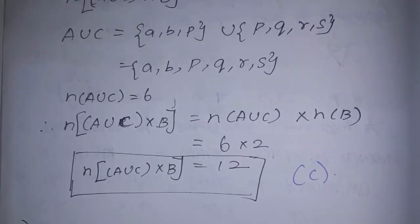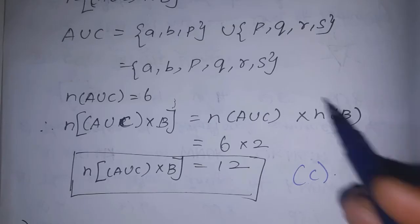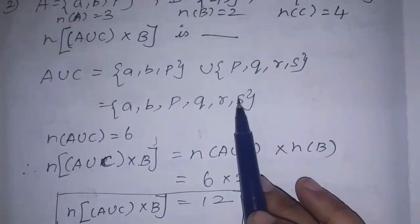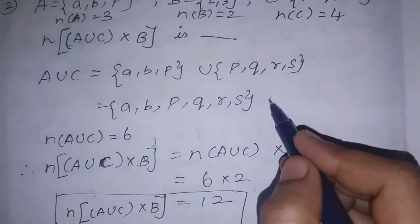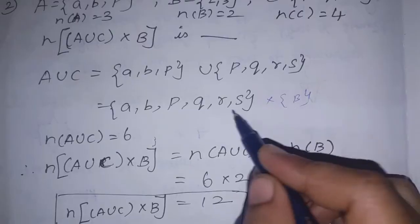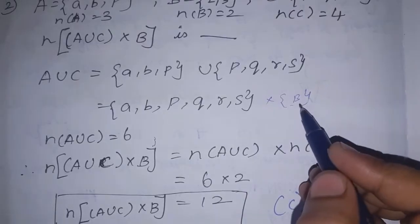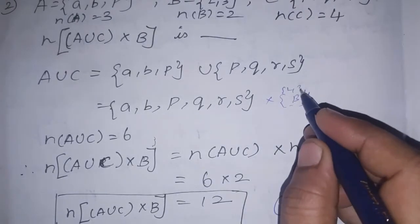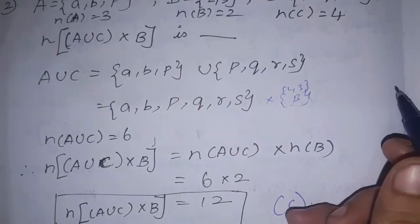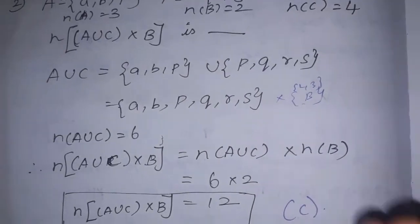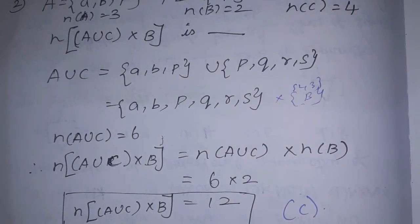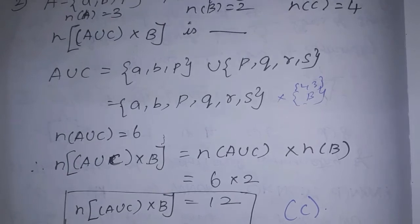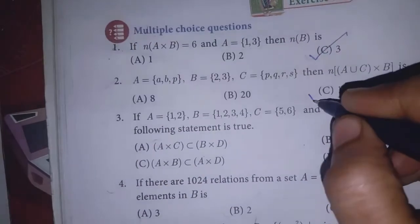If you want to try that method, you can verify by multiplying into set B, which is {2, 3}. Either way, option C is the correct answer for the second sum.